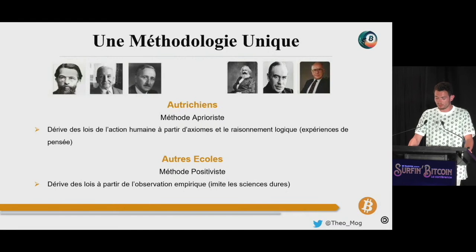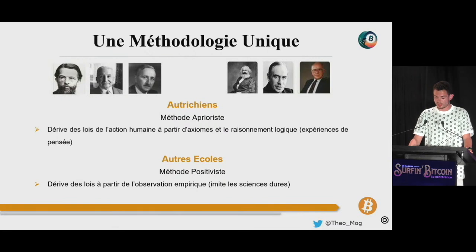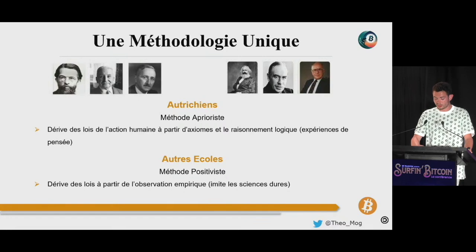Chaque moment de l'histoire est unique. La nature et le nombre de variables à considérer pour décrire les phénomènes de l'action humaine font qu'il est illusoire d'essayer de dériver une théorie de la seule observation des données. Avec la méthode positiviste, il suffit de changer le focus de l'analyse, de modifier le poids accordé à telle ou telle variable ou encore de considérer des sous-ensembles de données différents pour arriver à deux conclusions diamétralement opposées. Par conséquent, les modèles bâtis par les économistes néoclassiques et keynésiens souffrent soit de surapprentissage — c'est-à-dire qu'ils sont impropres à la généralisation — soit d'imprécision, au point qu'ils en deviennent inexploitables.